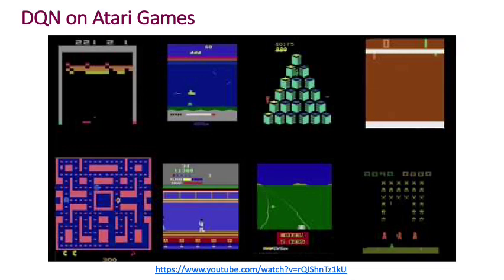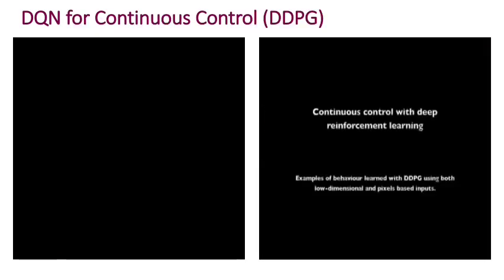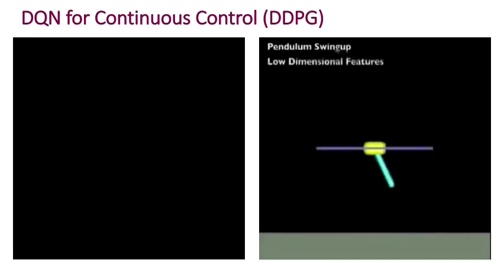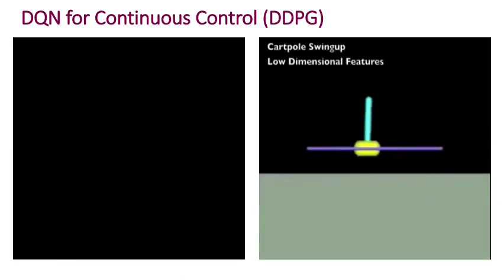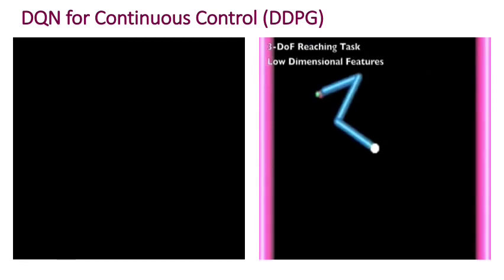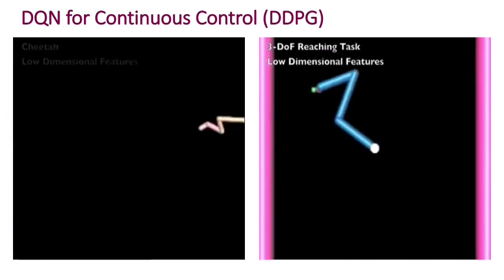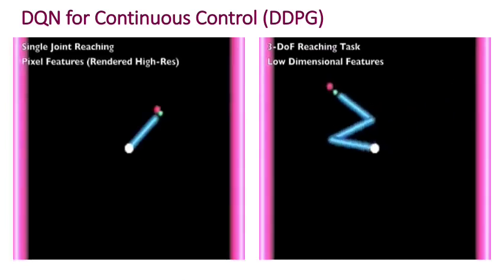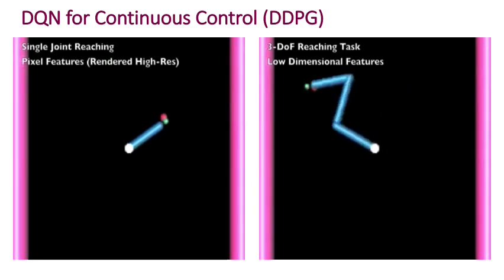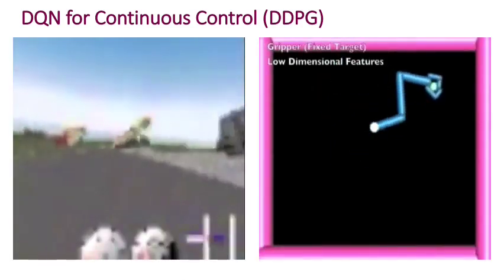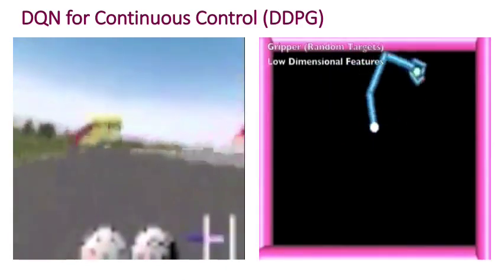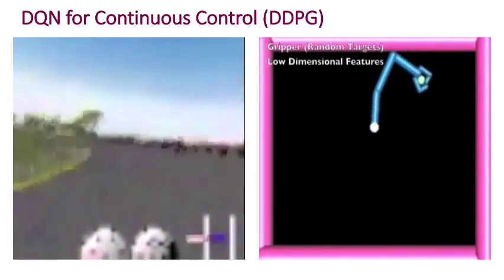And later, the same algorithm was also shown to be able to help with continuous control problems. In particular, you can modify DQN using this approach called DDPG for continuous control problems, where your actions are continuous, rather than the discrete actions we've been dealing with. And that lets you do things like robotics, where you typically have to deal with these kinds of continuous actions in order to be able to accomplish tasks. That includes, for example, driving as well, where in order to actually drive, you need to control, for example, the steering, which is a continuous input rather than discrete.